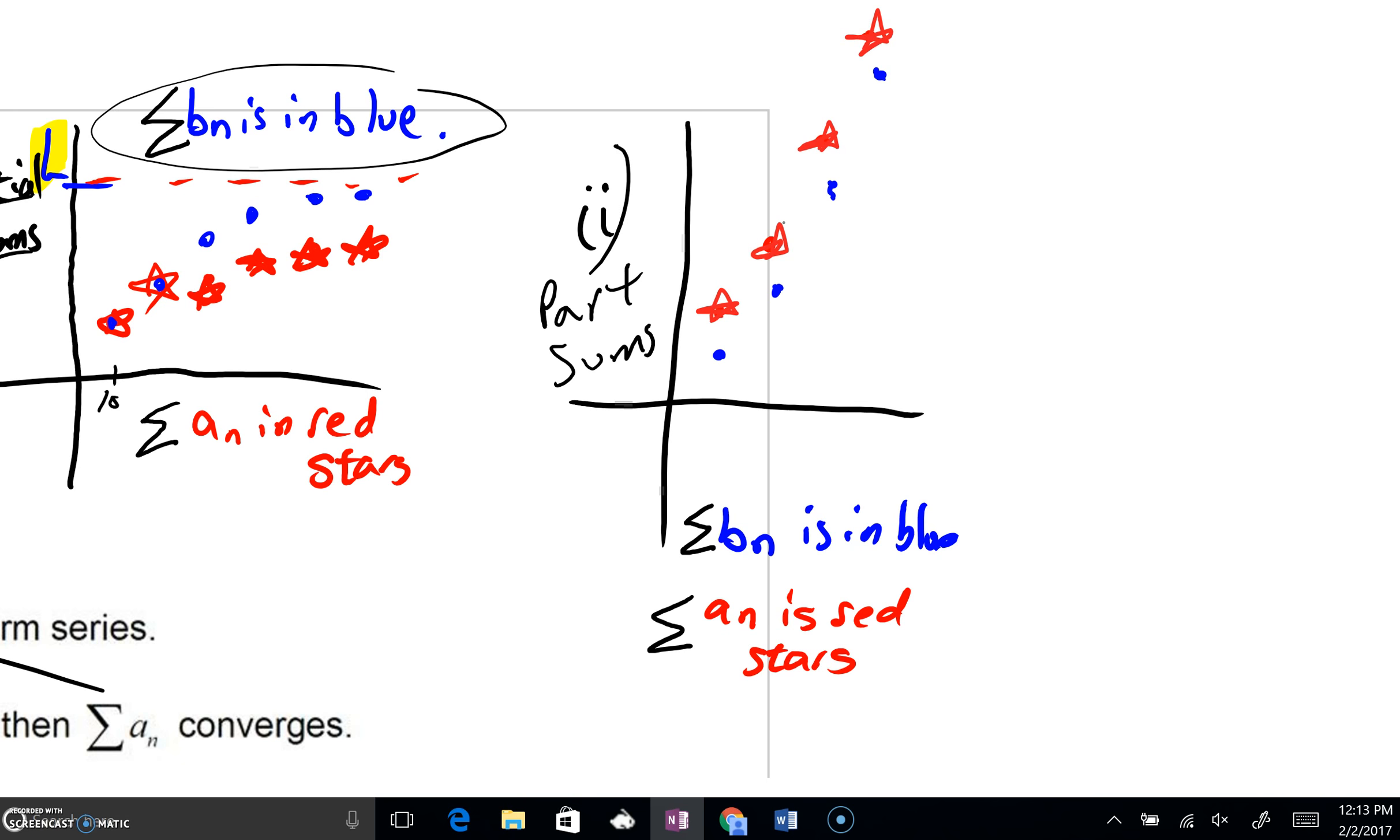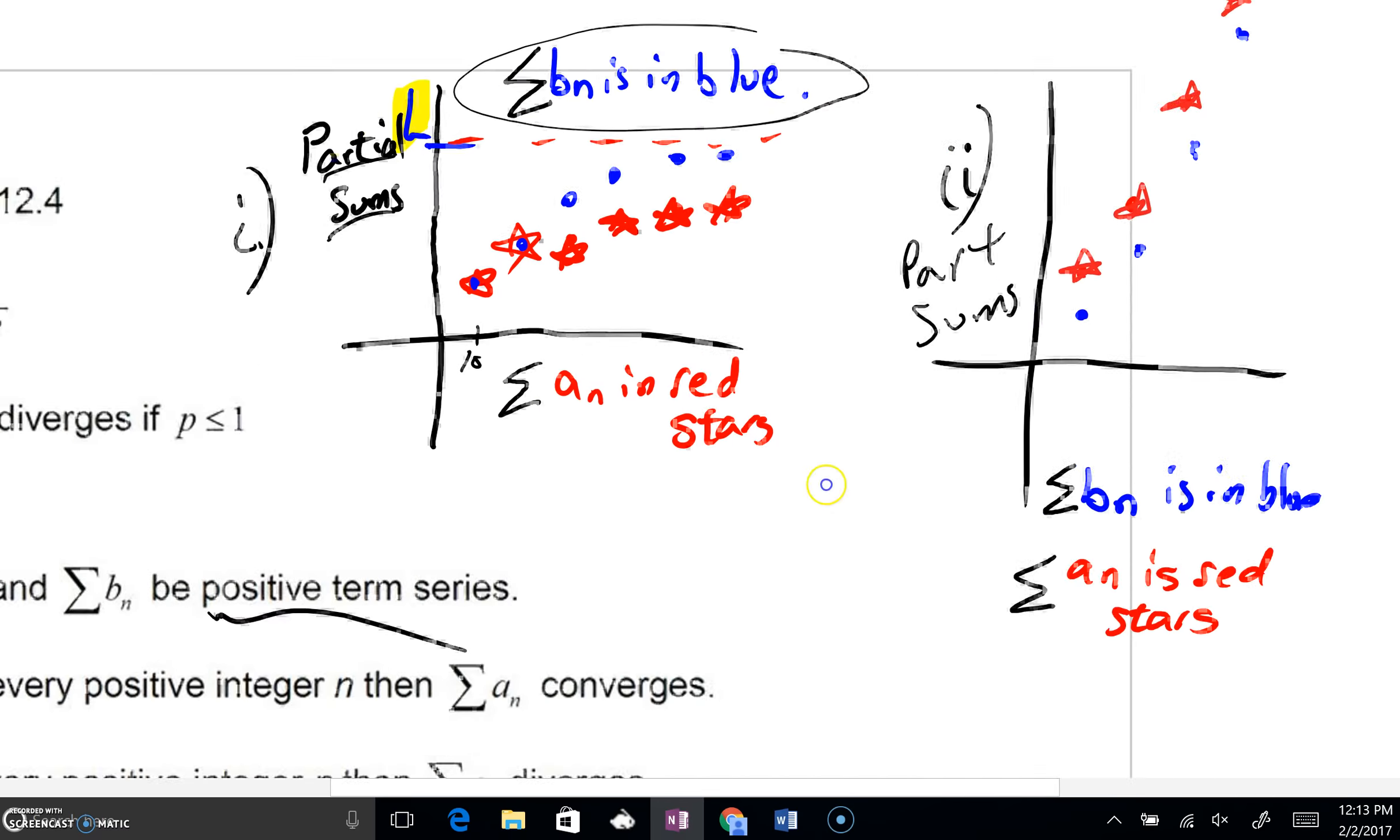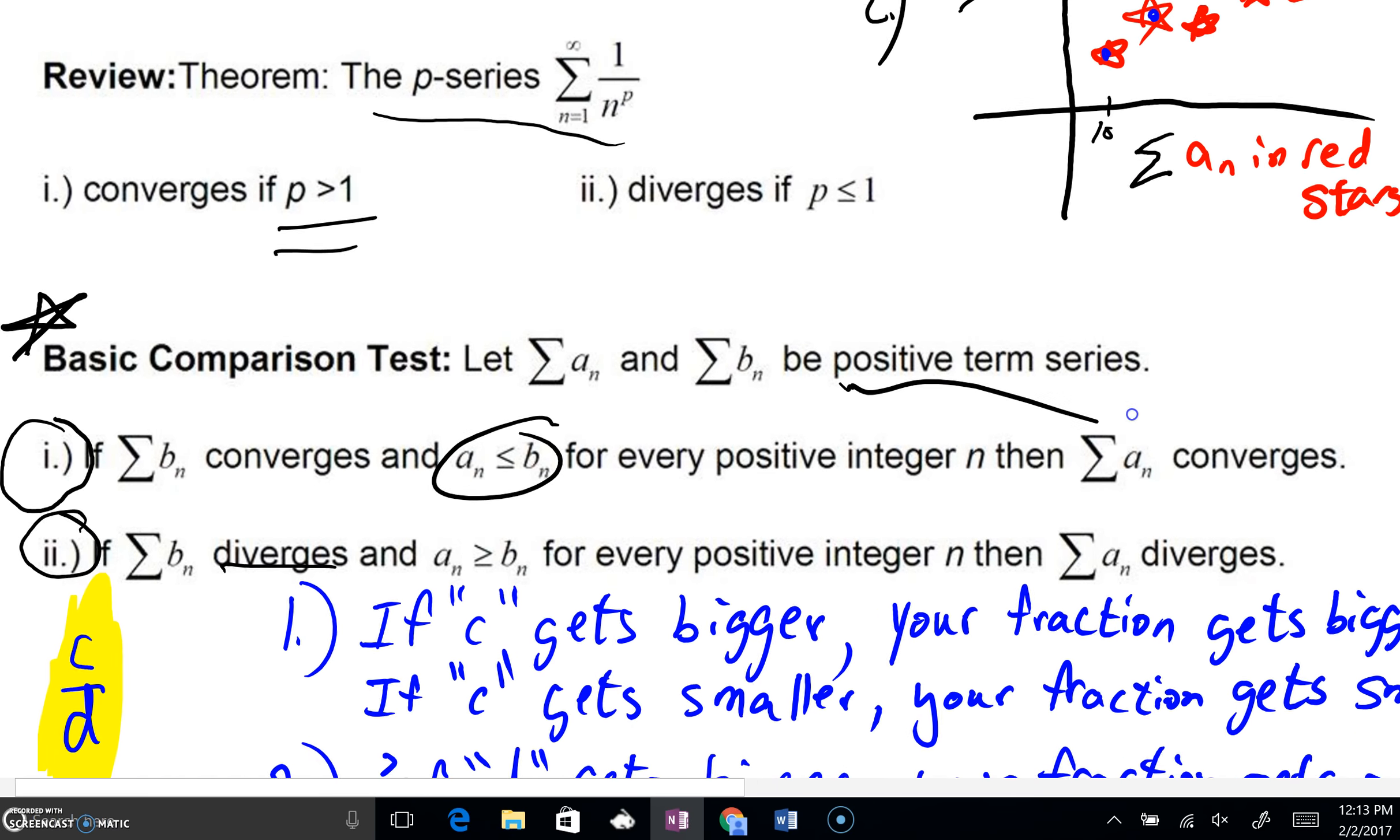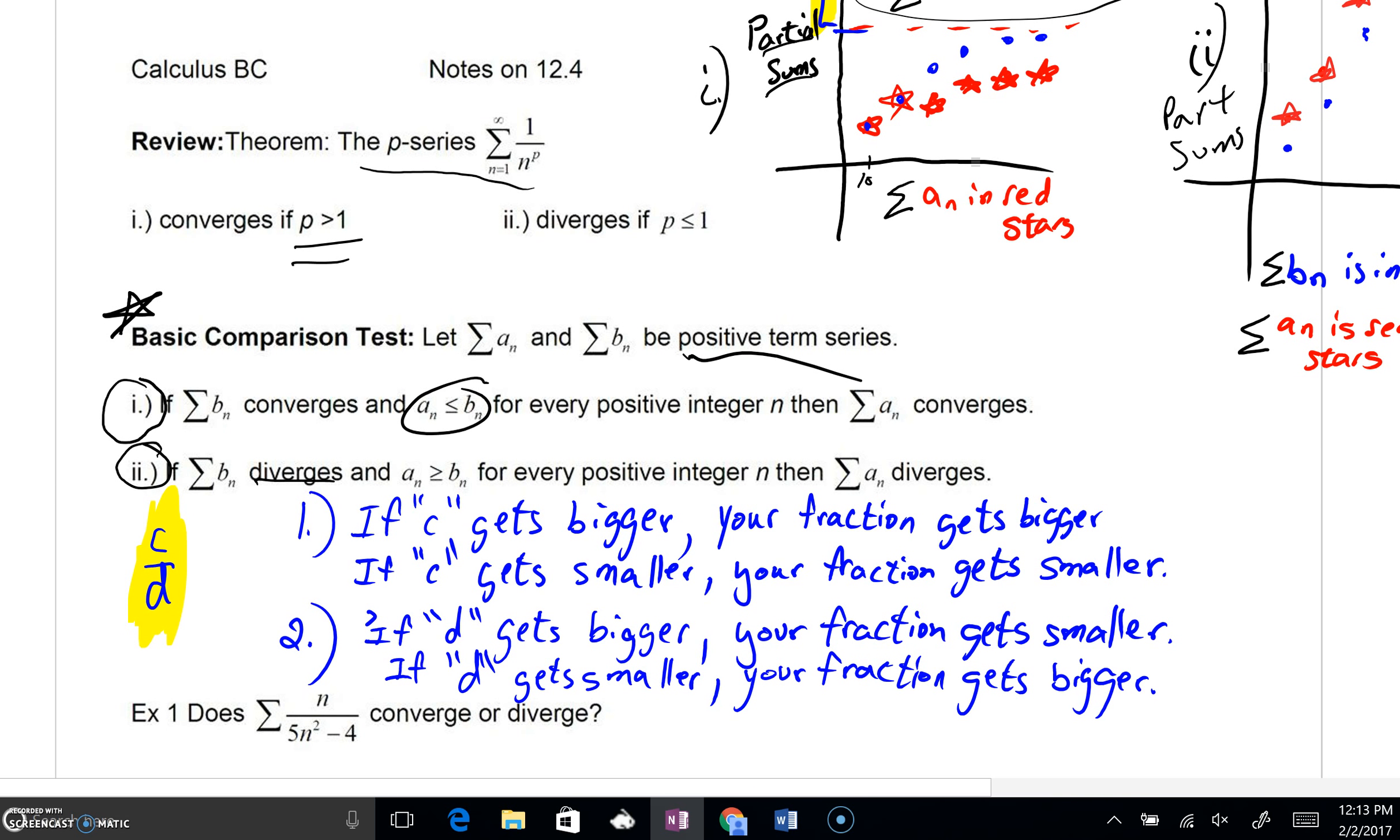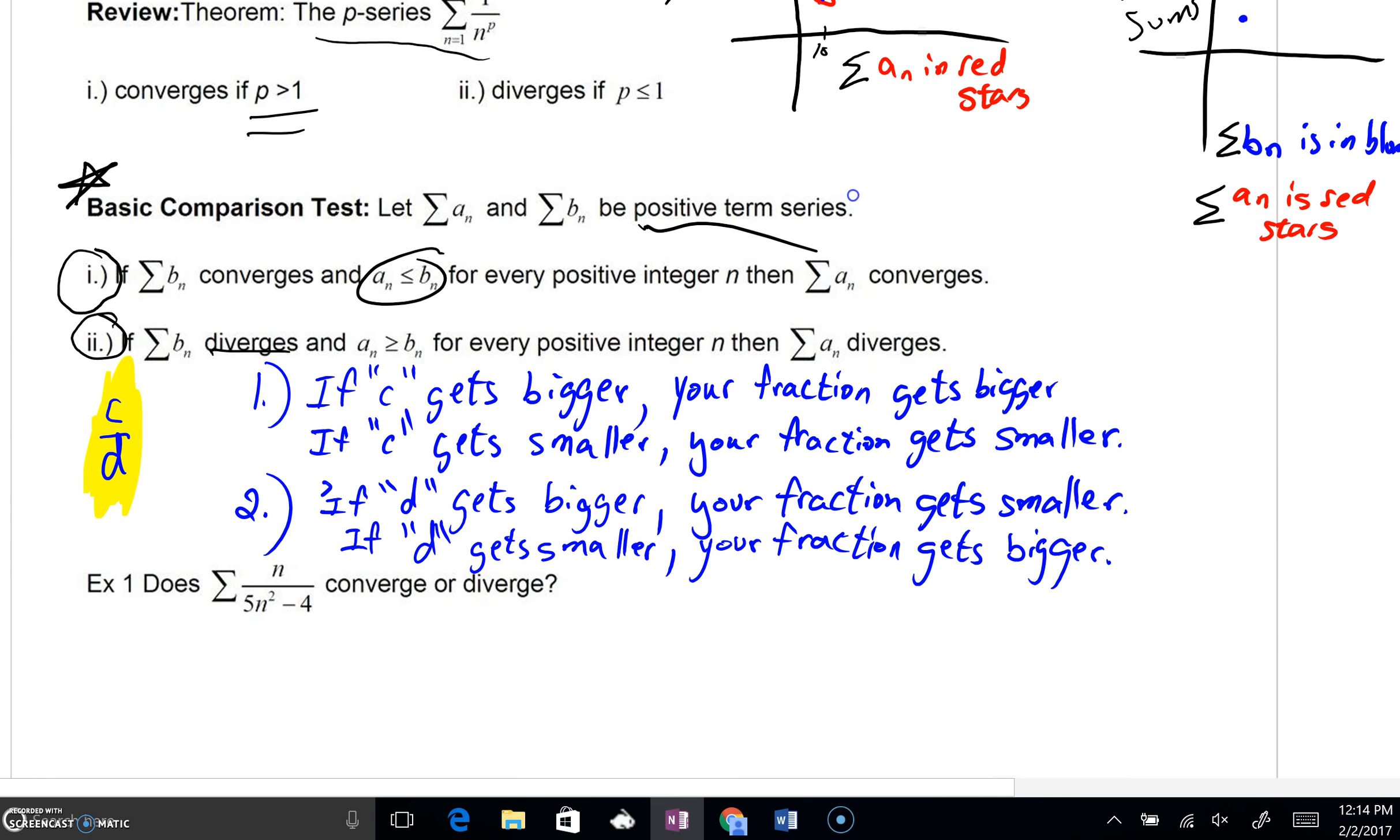Those are the basic ideas behind the basic comparison test. Now, are they going to give us two series? No, you're going to have to create a second series. You will be given one series and have to create a second series that hopefully you will recognize as a p-series or a geometric series. But first, something to discuss: some basic fundamentals.